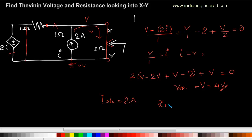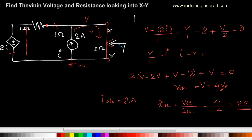From this we can find that Rth is nothing but Vth divided by the short-circuit current, which is 4 divided by 2, that is 2 ohms. So to summarize: first we found the Thevenin voltage looking into the terminal, then we found the Norton short-circuit current across the terminal. Now we have Rth, which is Vth divided by the short-circuit current.